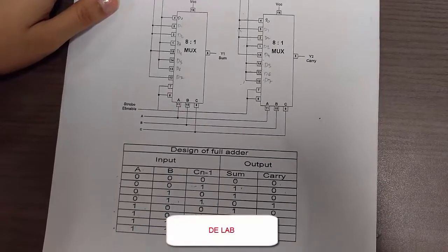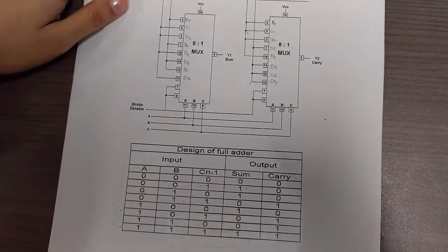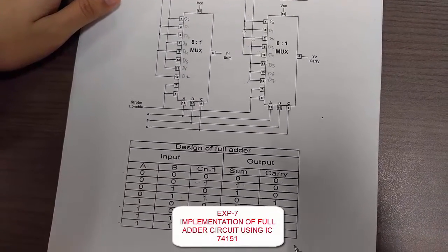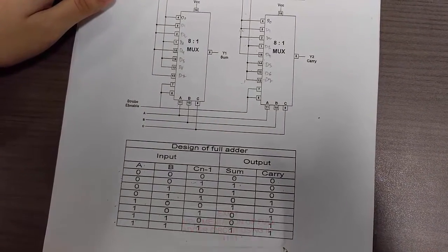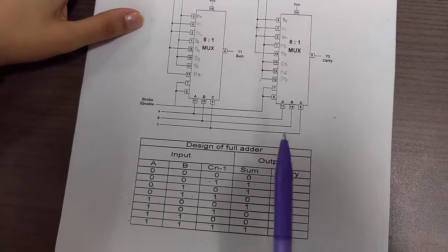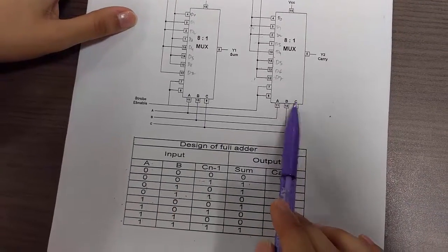Hello everyone, welcome to Digital Electronics Laboratory. This is experiment number 7, titled Implementation of Full Adder Circuit using 74151 IC multiplexer. We used two multiplexer ICs for that: one for sum and the other for carry.